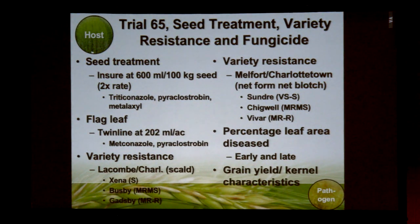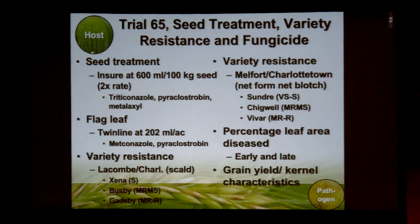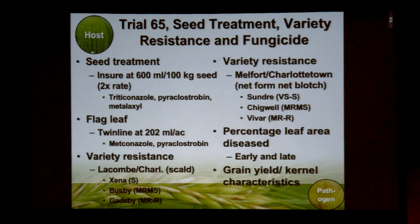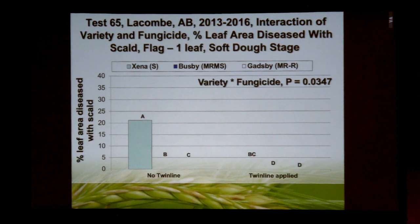We wanted to look at the impact of resistance alongside seed treatments and fungicide applications. We looked at a seed treatment, a flag leaf stage fungicide application with Twinline, and variety resistance — using a susceptible, an intermediate, and a resistant variety. At Lacombe the target disease was scald; at Melfort the focus was net blotch; and at Charlottetown PEI our colleagues looked at both net form net blotch and scald. We measured percent leaf area diseased, grain yield, kernel characteristics, and so on.